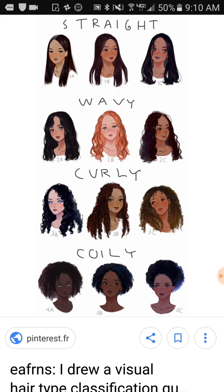They're straight, wavy, curly, coily — that's what they're showing you. So type 1 is straight, wavy is type 2, curly is type 3, and coily is type 4. I'm 4A. I'm 4A, so I didn't know that, but now I do.